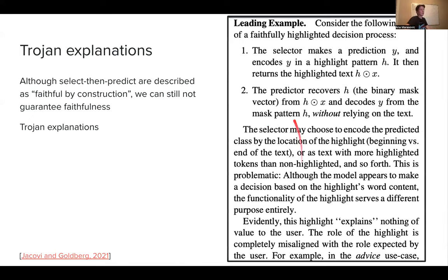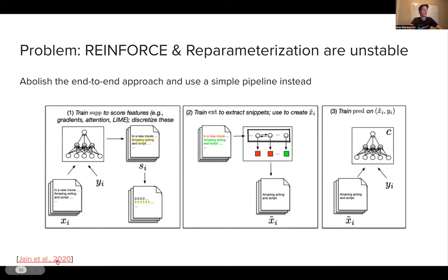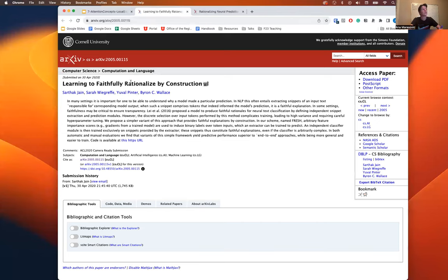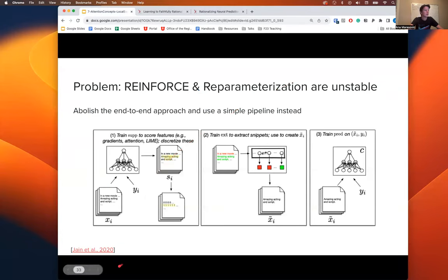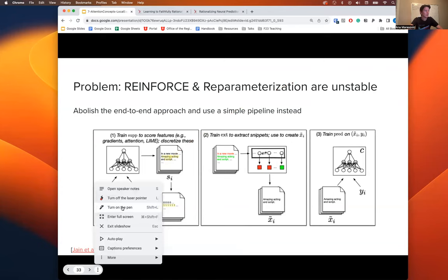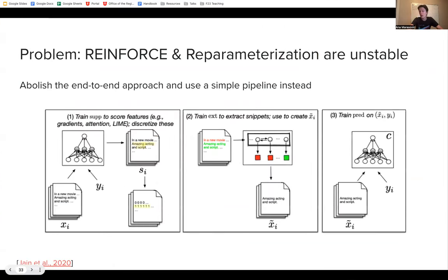So to kind of conclude with this whole story about select and predict, you have seen three different approaches. I want to come back to the point I said that even though your explanations here should be faithful by design, such as with this approach pipeline, I think it's even in the name of the paper, they say learning to faithfully rationalize by construction, meaning by design, by constructions, the highlights we extract here or rationales are going to be faithful. And what Jacovi and Goldberg had told us, well, watch out, even those can be suspicious.